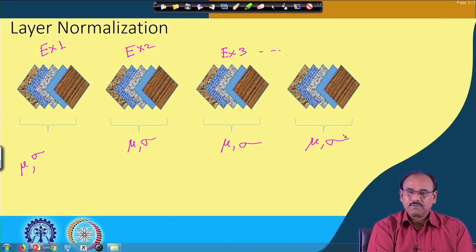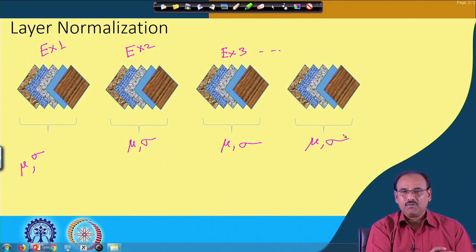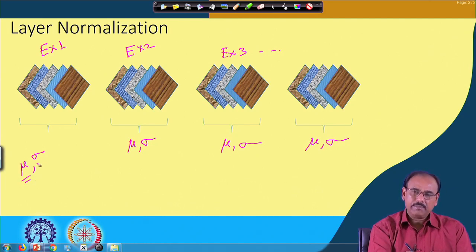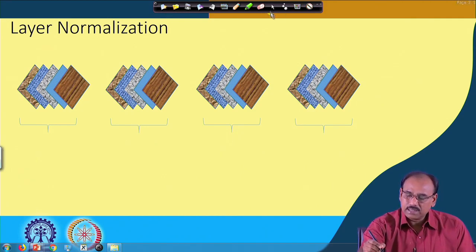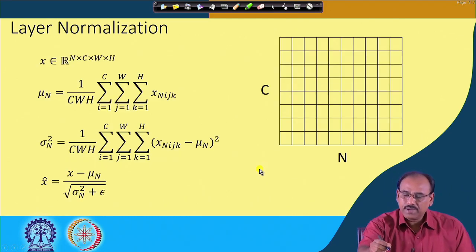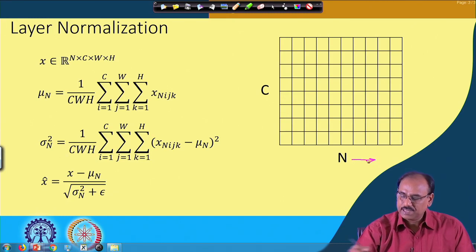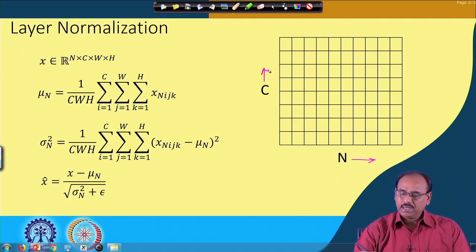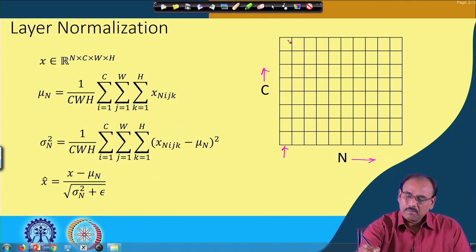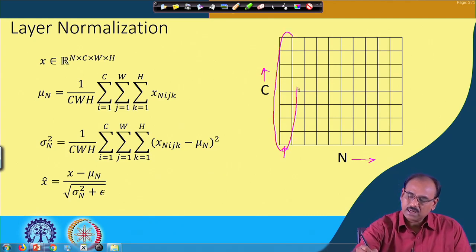In batch normalization, the dimensionality of the mean vector equals the number of channels, since one mean and one standard deviation is computed per channel. In layer normalization, because mean and standard deviation are computed from all channels of a single example, the dimensionality of the mu vector and sigma vector is also equal to the number of channels.